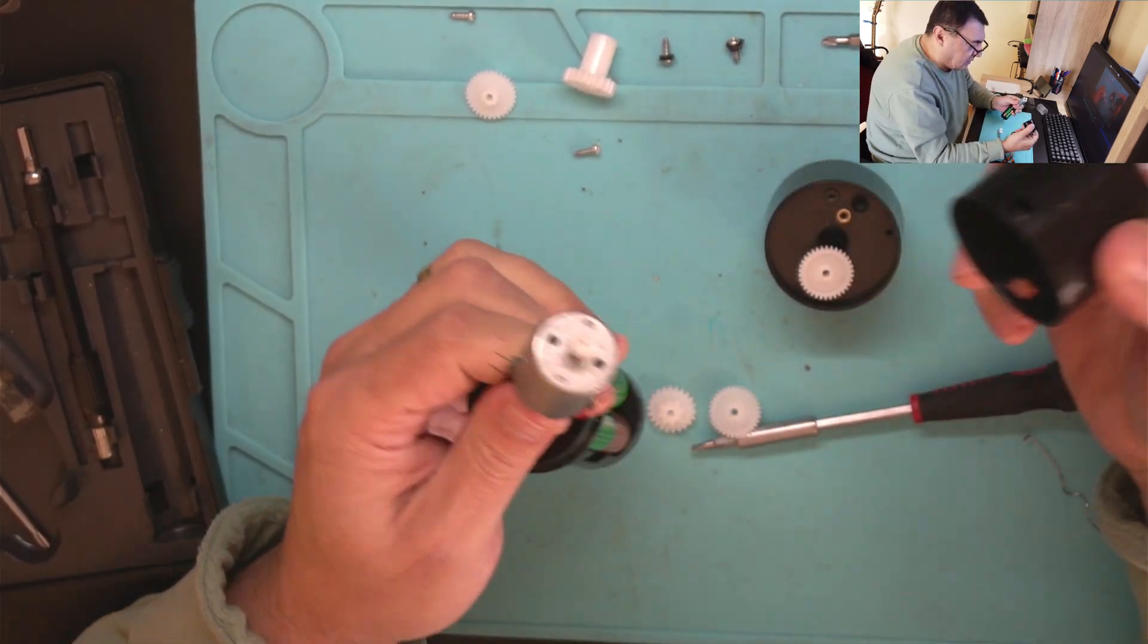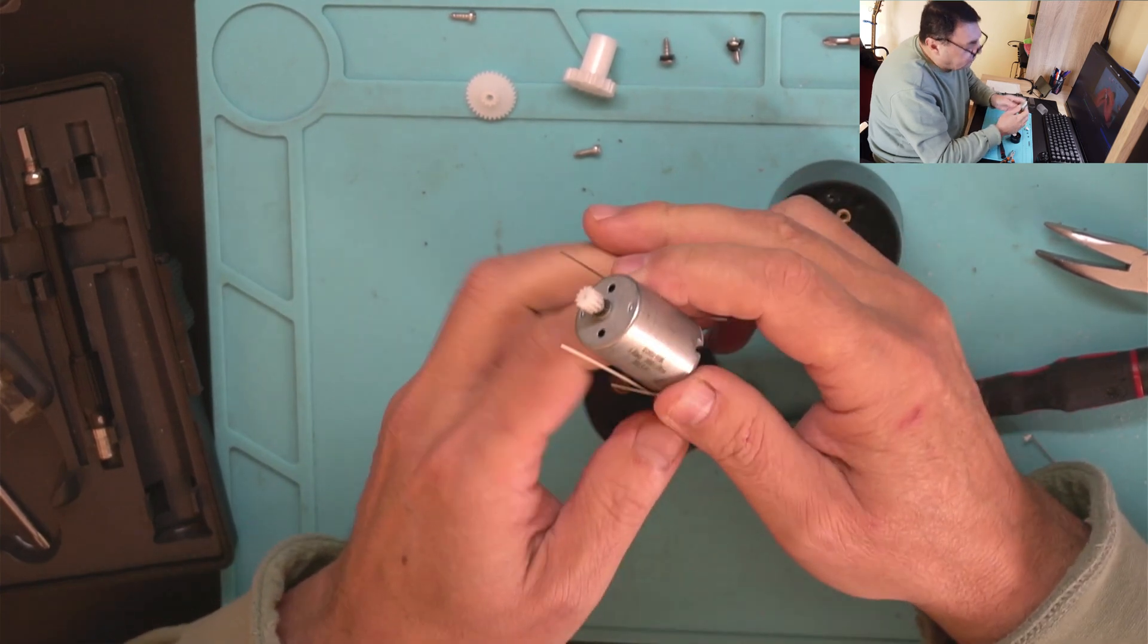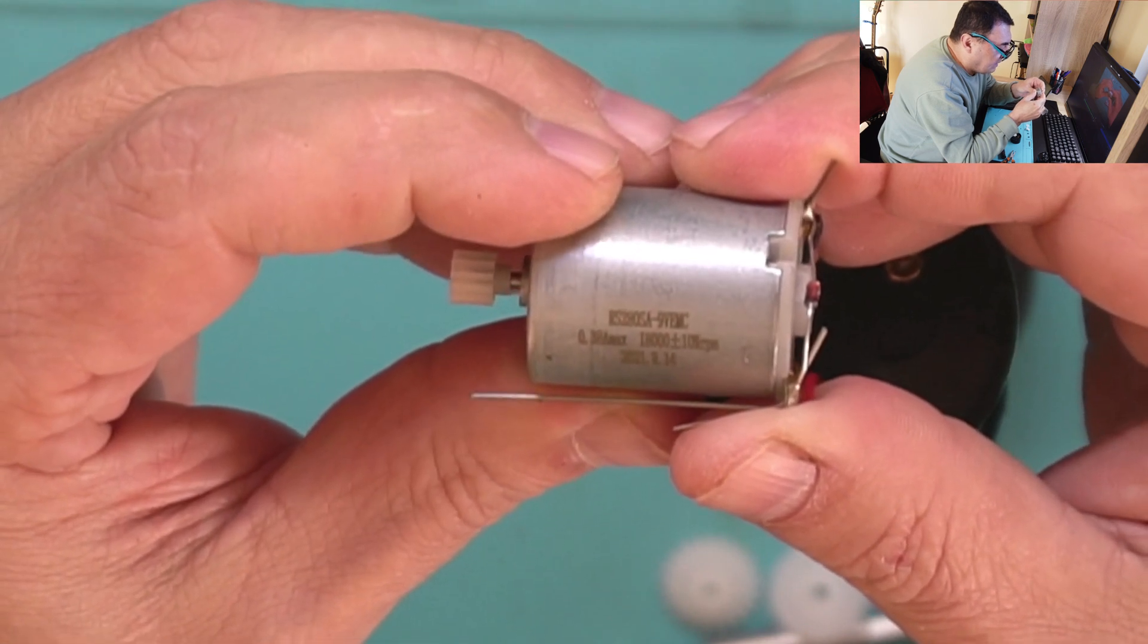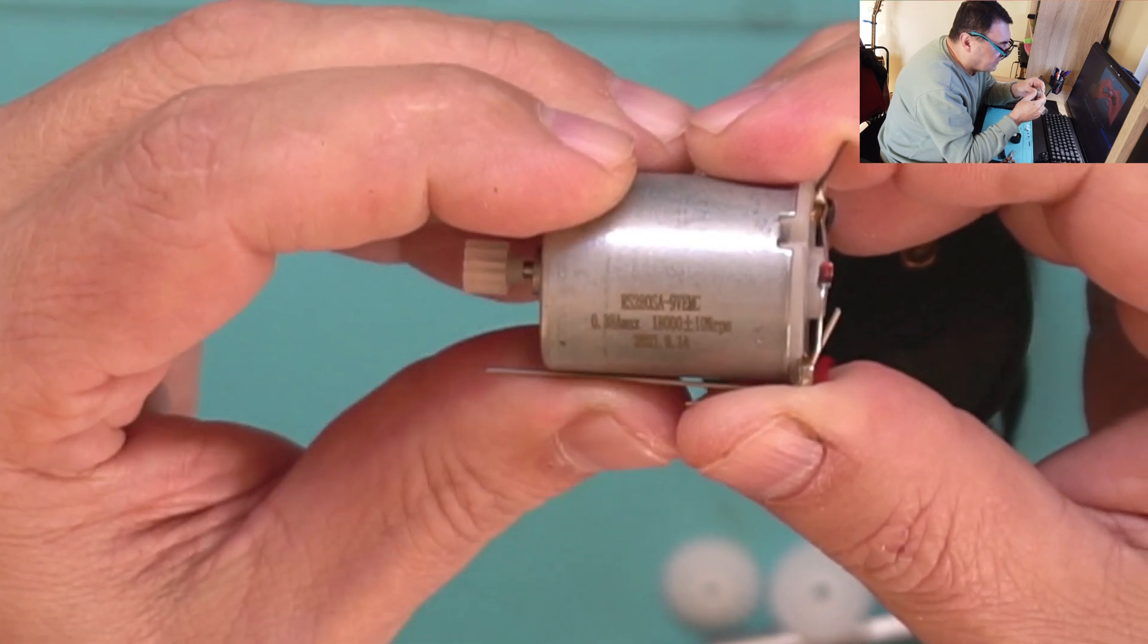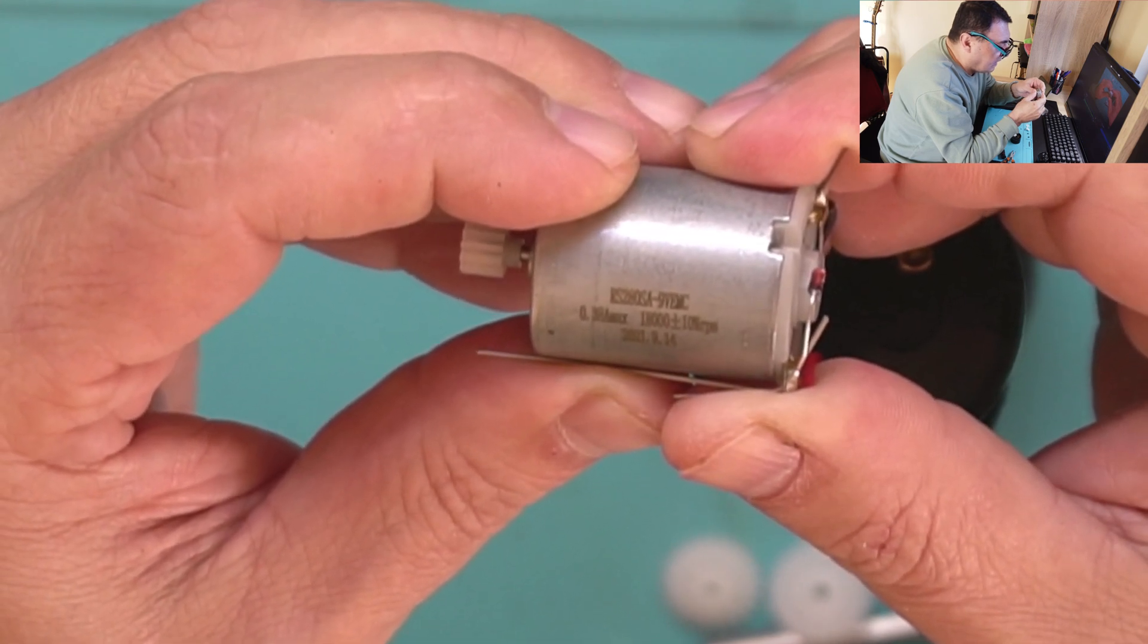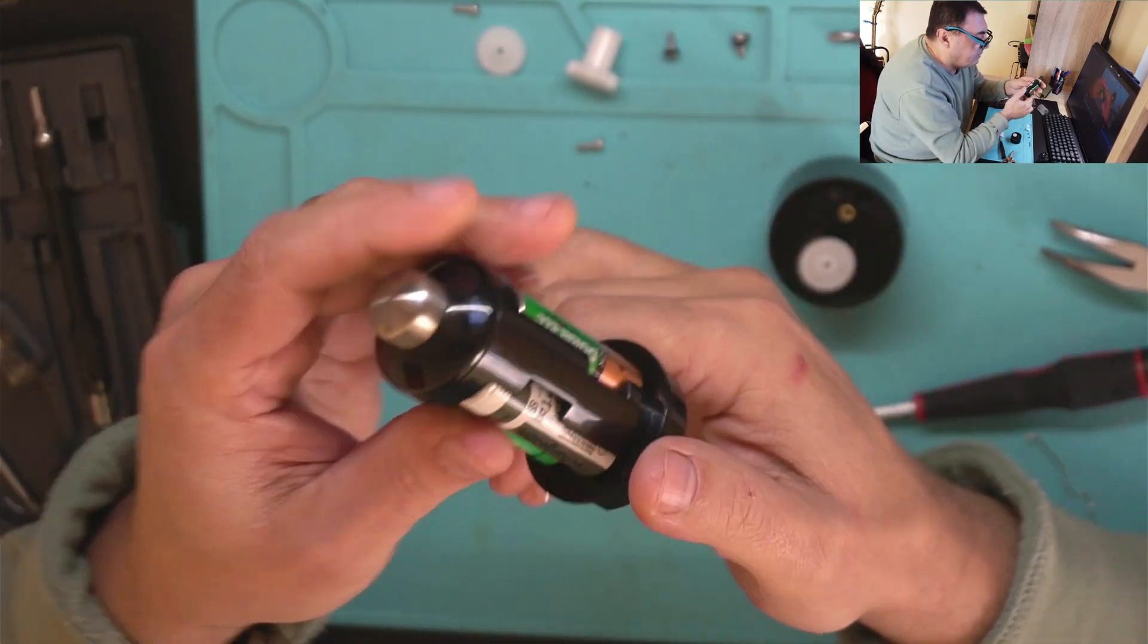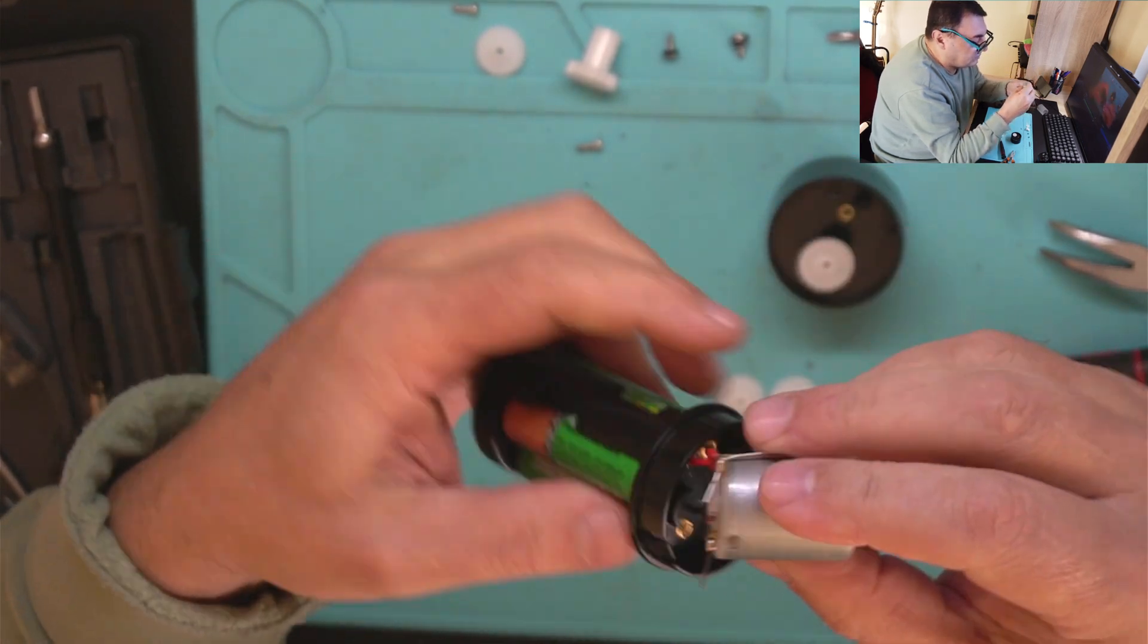How is this one? Ah, okay. Very simple. So this is supposed to be RS 280 SA, 9V EMC, 80,000 rotation per minute, 380 milliamps. So this supposed to work with 9V. We barely have 6V here, so it's well under voltage.